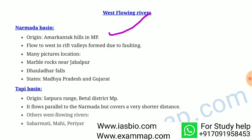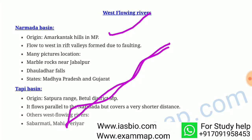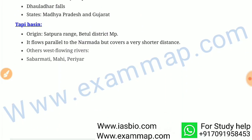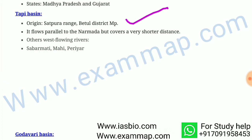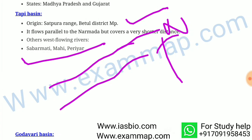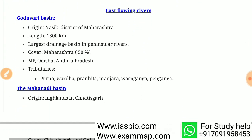The Narmada flows west through rift valleys formed due to faulting. Important locations include Marble Rocks near Jabalpur and Dhuandhar Falls. The states covered are Madhya Pradesh and Gujarat. The Tapi has its origin in the Satpura range, Betul district of Madhya Pradesh. It flows parallel to Narmada but covers a shorter distance. Other west flowing rivers are Sabarmati, Mahi, and Periyar.